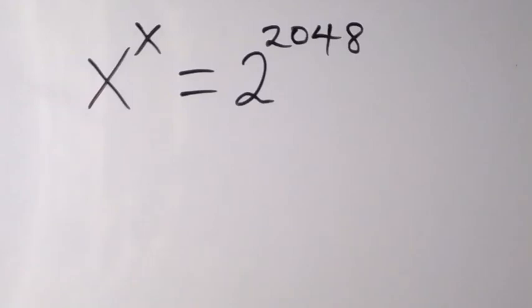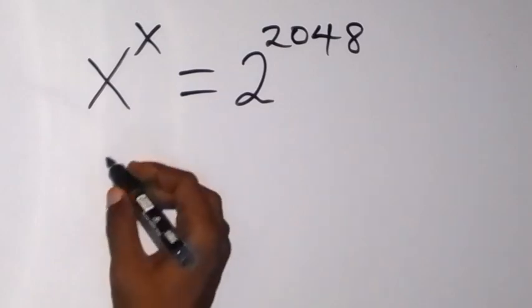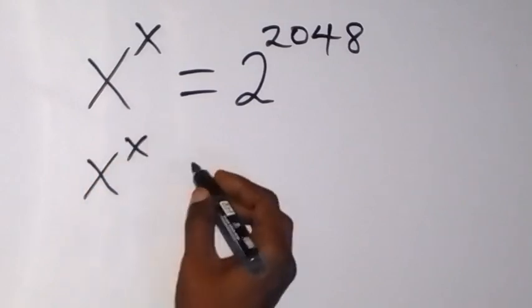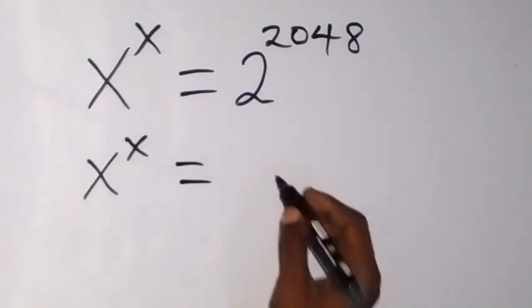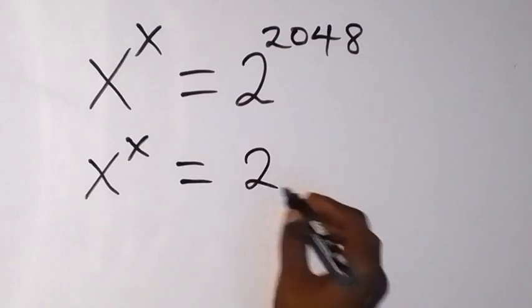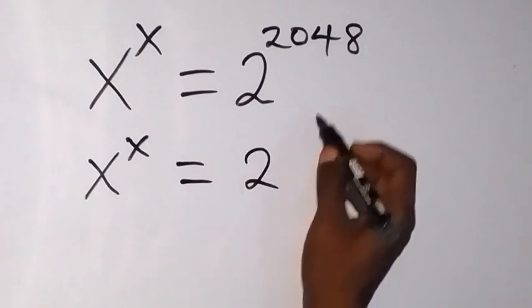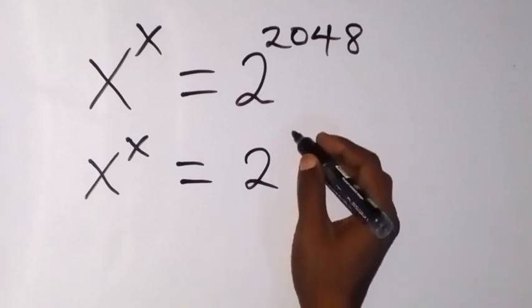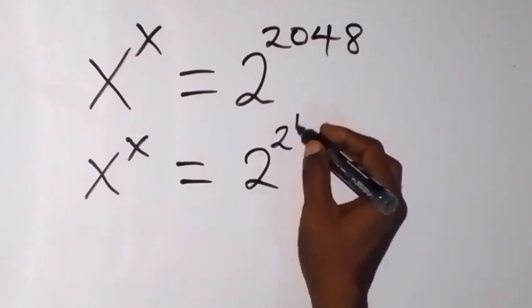Welcome to this class, and thank you for joining us. We want to find the value of x in this exponential equation. We write this as x raised to power x equals 2 raised to power 2048, and this power 2048 can be written as 2 raised to power 11.